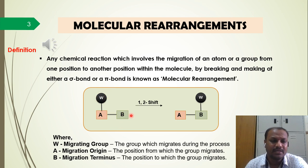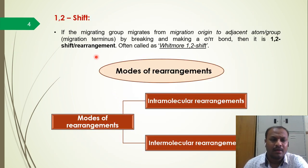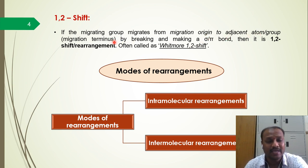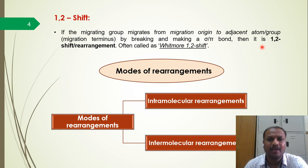What is a 1,2-shift? If the migrating group migrates from the migration origin to an adjacent atom — the migration terminus — which is exactly located adjacent to the migration origin, that means the second position, by breaking and making a sigma or pi bond, then that shift is called a 1,2-shift.